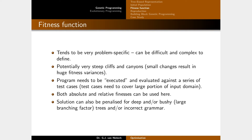The program has to be executed, typically using something like an in-order traversal of the tree. The results of these executions are tested against a set of known test cases to evaluate how good the program is. Both absolute and relative fitnesses can be used, as with genetic algorithms. Solutions can also be penalized if they become very deep or very wide, and incorrect grammar can be totally avoided by requiring that crossover and mutation only leave you with valid trees.